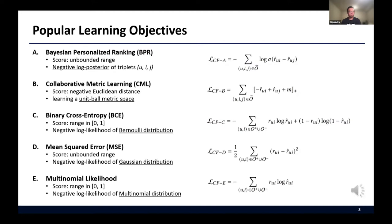Let's briefly look at these objectives. First, A is Bayesian Personalized Ranking loss, which uses negative log posterior of triplets. B is Collaborative Metric Learning loss, which learns a unit ball metric space. C is Binary Cross-Entropy, which uses the negative log likelihood of Bernoulli distribution. D is Mean Squared Error, which uses the negative log likelihood of Gaussian distribution. And finally, E is Multinomial Likelihood, which uses the negative log likelihood of multinomial distribution.